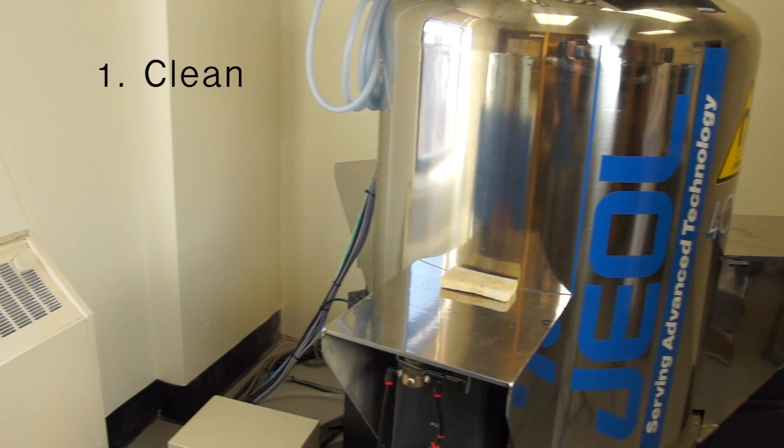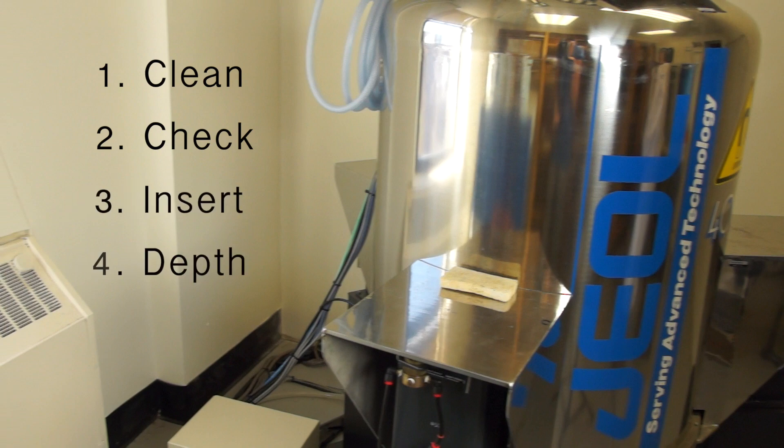To summarize, first clean the NMR tube. Then check to make sure the spinner turbine is fully extended. Insert the NMR tube into the spinner turbine. Check the depth of the NMR tube. And then finally, place the NMR tube and spinner turbine into the NMR carousel.